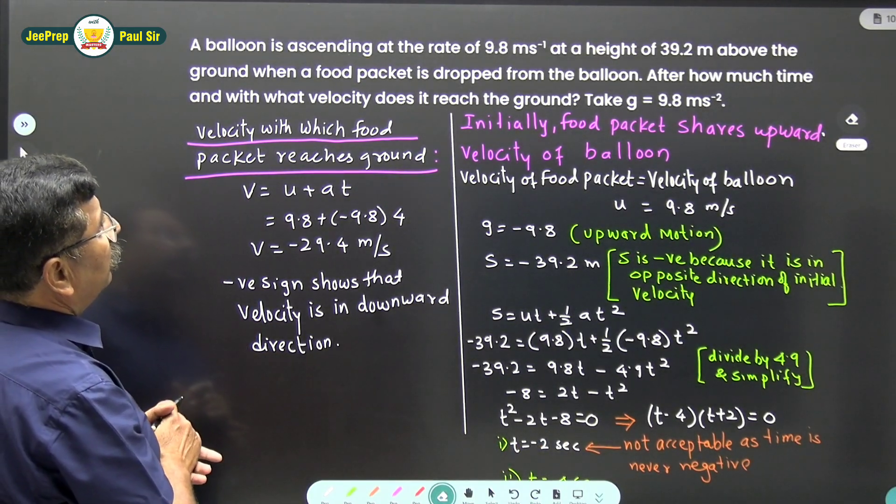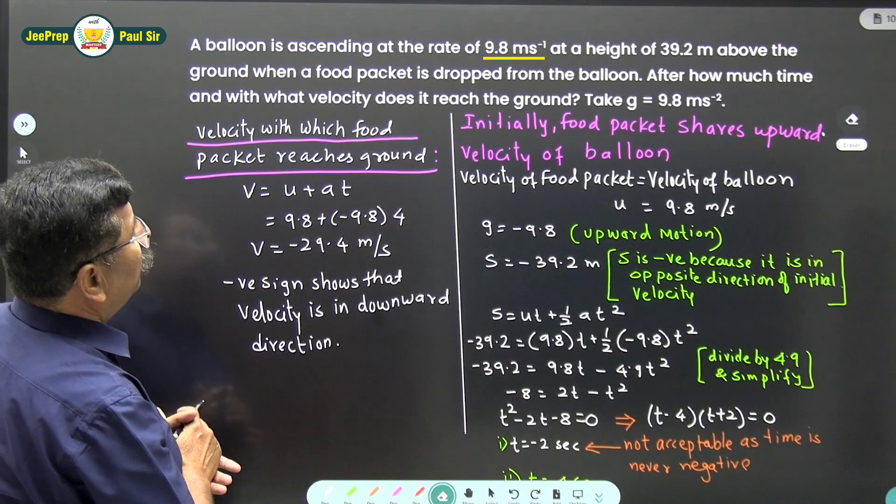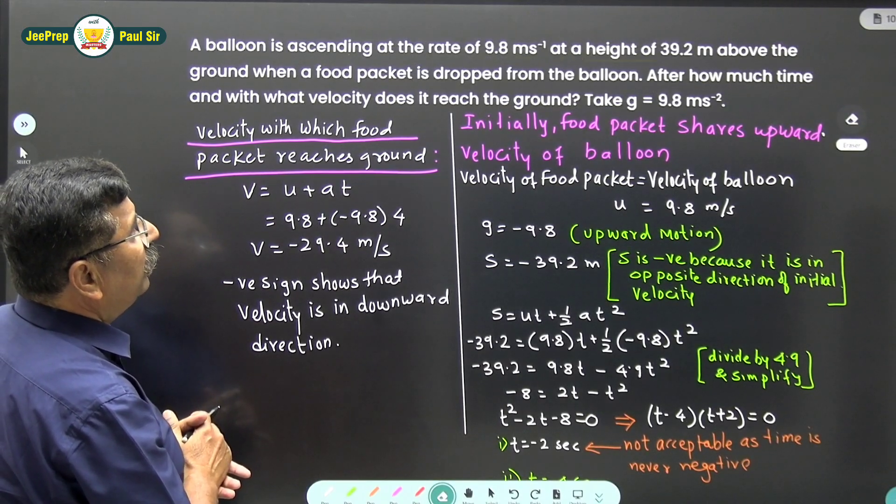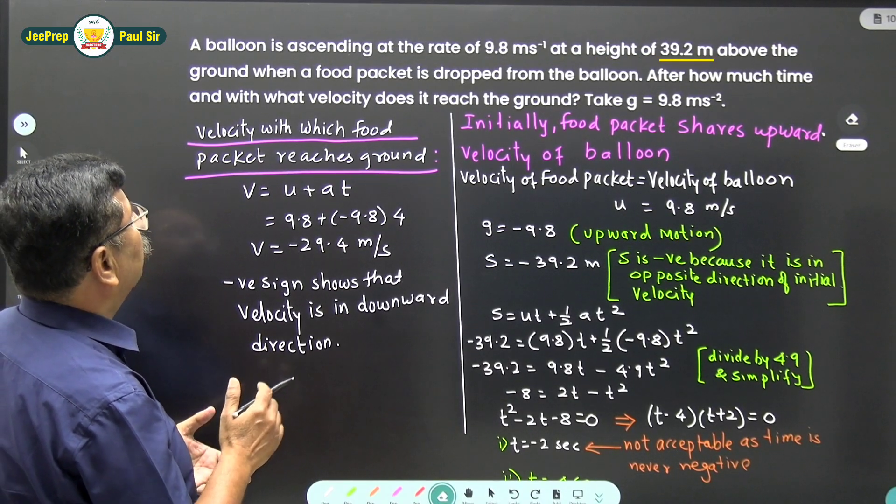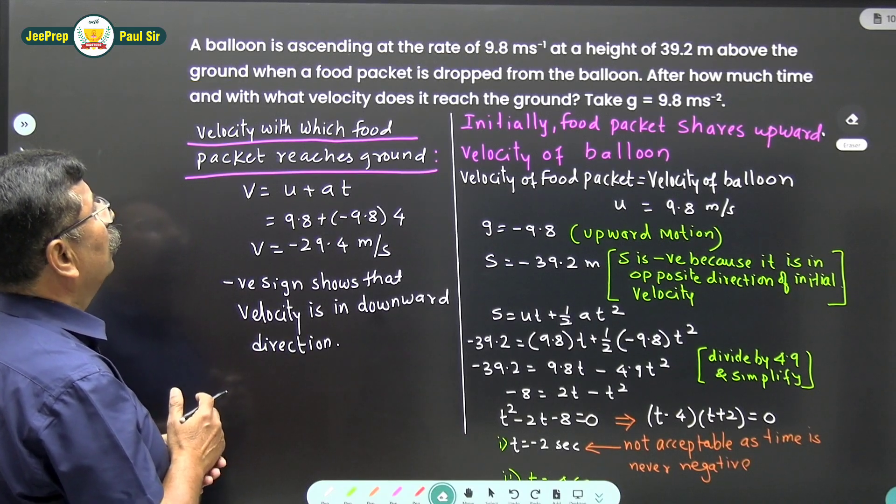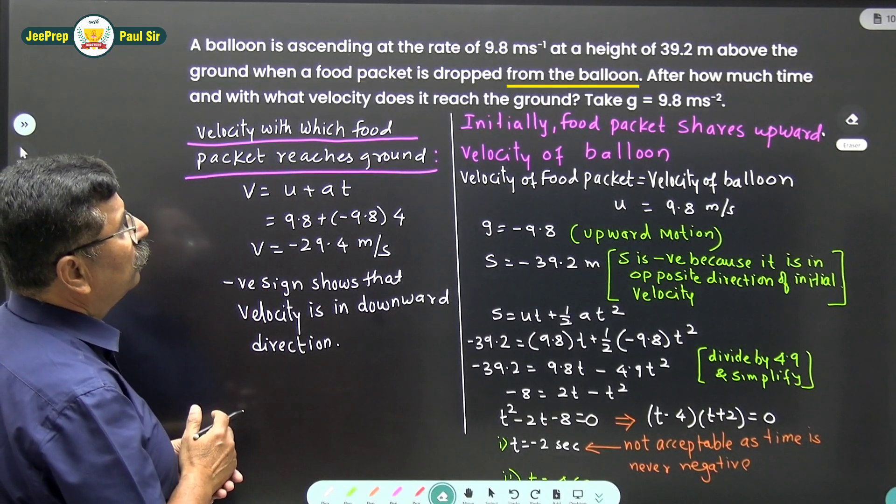A balloon is ascending at a rate of 9.8 meter per second at a height of 39.2 meter above the ground when a food packet is dropped from the balloon.